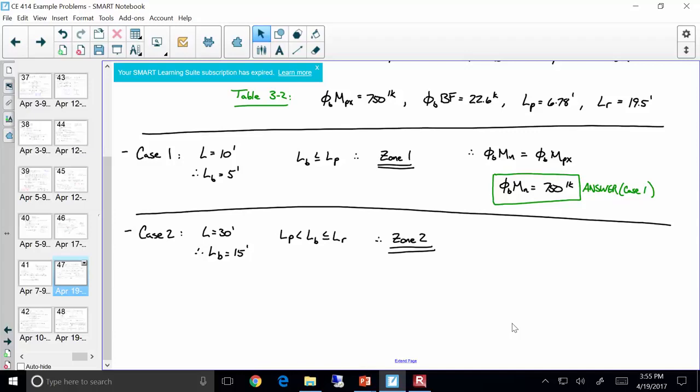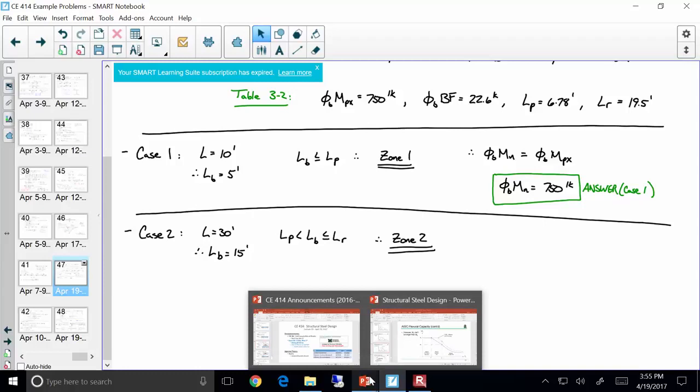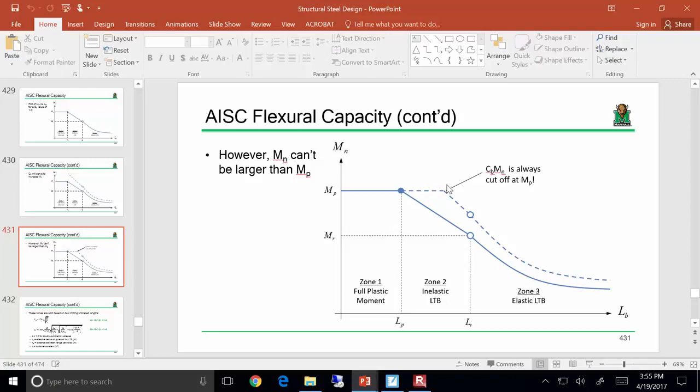Now, for case two, this is, you can treat this as if it's an entirely different problem. So, you know, we'll say, you know, 23A or 23B or 23C. Case two, we have a beam that's 30 foot long. That's its unbraced length at 15 feet. And if you look up in the top right, you'll see that's between the L_P and the L_R. So, we're in zone two. So, that puts us in this range right here.